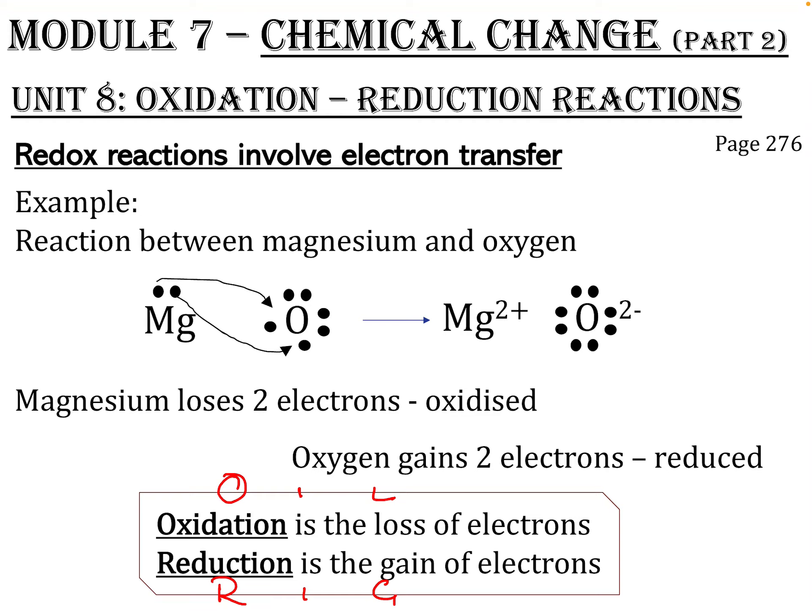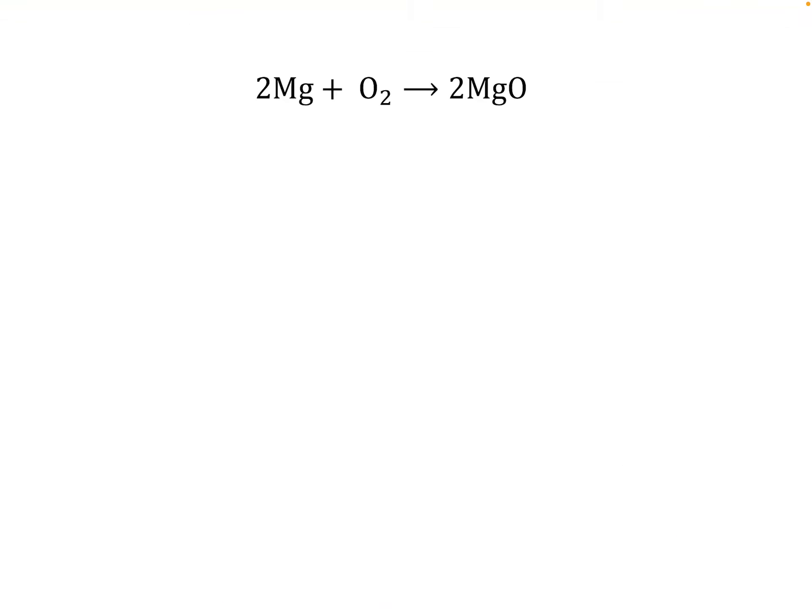Once you finish this video, on Teams there is a video called revision of redox reactions. It's a really nice animation which shows you how this all works in a way that makes it easier for you to visualize. The magnesium goes to magnesium oxide, that's oxidation, because it lost two electrons. Oxygen goes to magnesium oxide as well, but this is reduced because it gained two electrons.